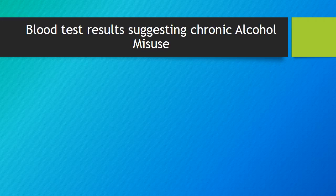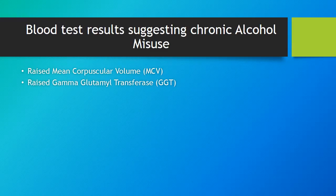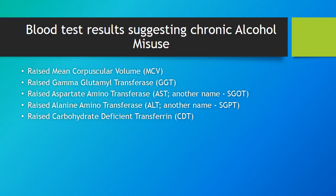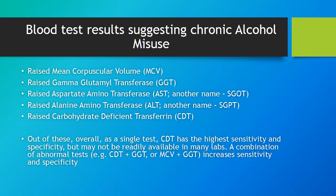There are certain blood test results which can support a diagnosis of alcohol misuse: raised MCV or macrocytosis, raised GGT which is a liver enzyme, raised ALT and AST which are also liver enzymes, and raised CDT or carbohydrate deficient transferrin. Out of these, CDT has the highest sensitivity and specificity but may not be readily available in many labs.